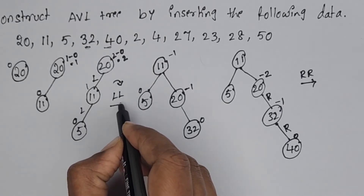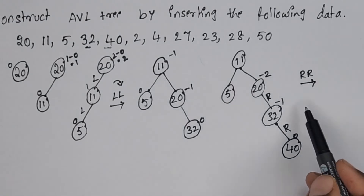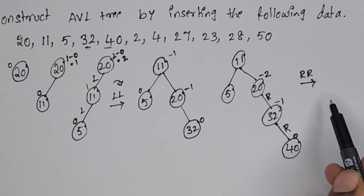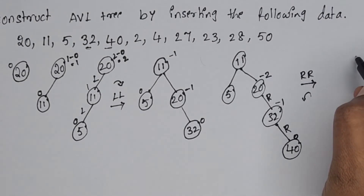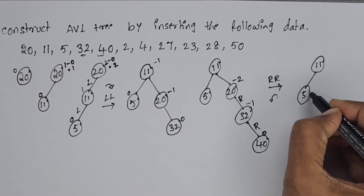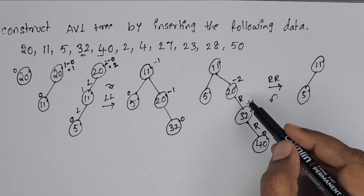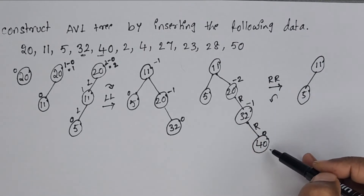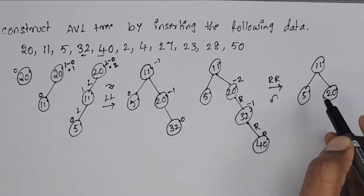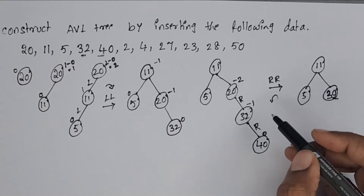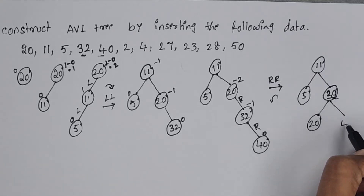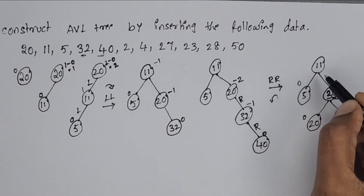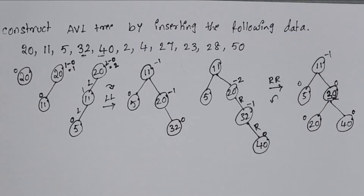In the previous step we performed LL rotation; now we perform RR rotation, which means a single left rotation. In RR rotation, we rotate the three unbalanced nodes: 32 becomes the root (the middle one always becomes root), 20 becomes the left child of 32, and 40 becomes the right child of 32. After rotation, the balance factors are 0, 0, 0, 0, and 11 has balance factor 1 minus 2 = -1. The tree is now balanced.